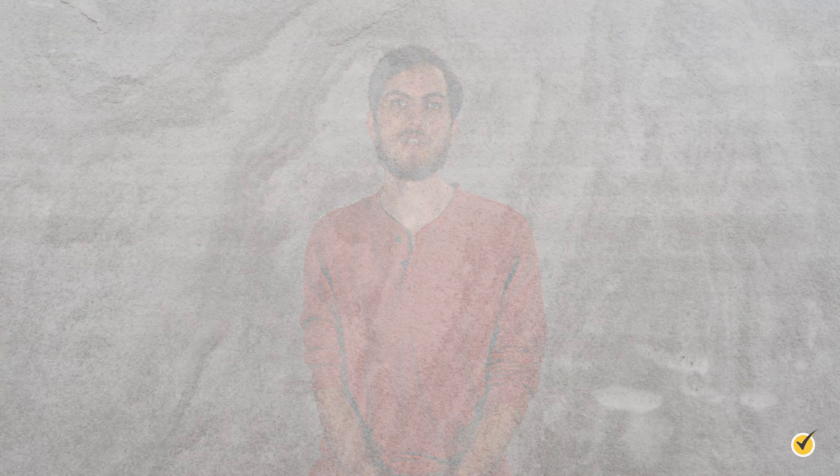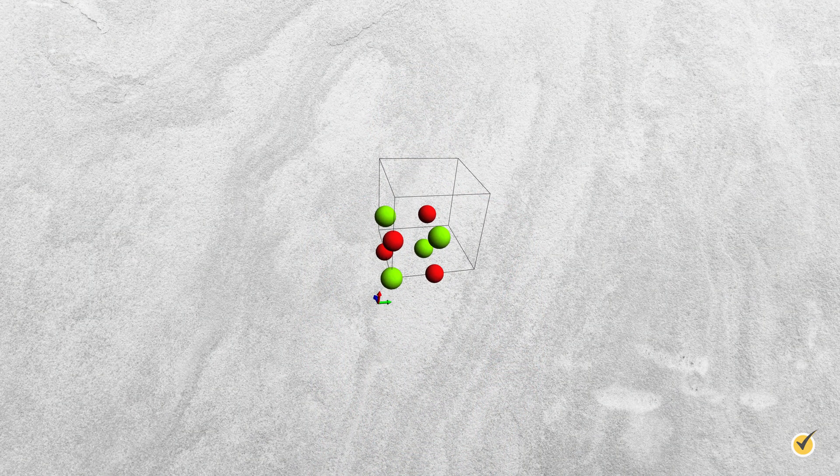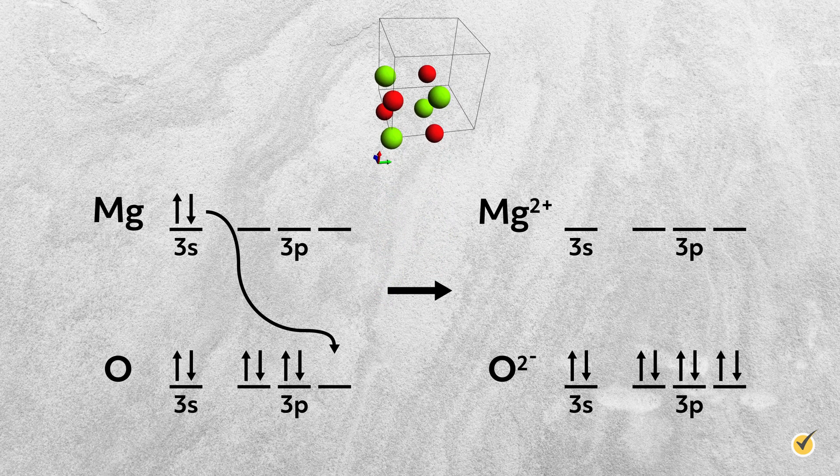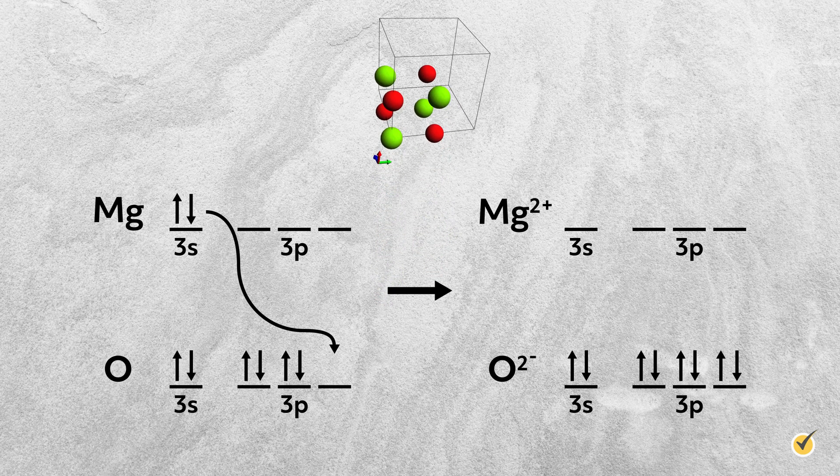Thus far, we have only considered the ionic bond between sodium and chlorine, which involves just two atoms and the transfer of one electron. However, ionic bonds can be more complex than this. First, instead of combining a group 1A and 7A element with just a single electron donated, elements from group 2A and 6A can also form ionic bonds. In these cases, the group 2A element donates two electrons to the 6A element. Magnesium oxide, MgO, is one such example, where magnesium donates its two 3s electrons to fill up oxygen's 3p orbital.